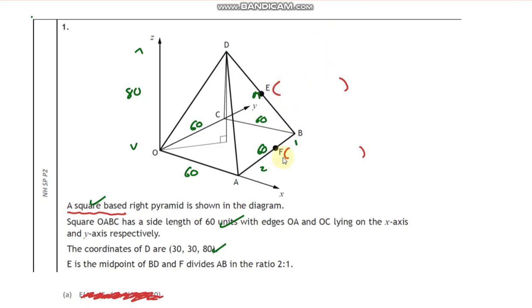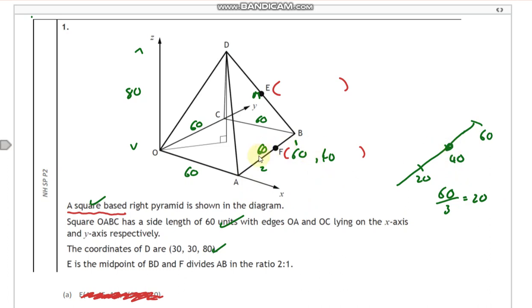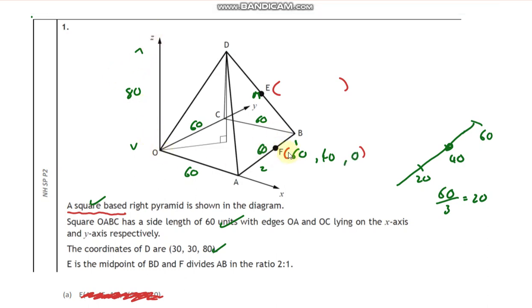Let's get the coordinates of F first, as it looks a bit easier. In the x direction I'm going along 60. In the y direction this whole line is 60, and it's a two to one ratio — two to one means three parts, so 60 divided by three gives 20 per part. That means we go 20, 40, 60, and our point is two-thirds of the way along, so that's 40. In the z direction it's zero — it's still on the bottom face. So F is (60, 40, 0).